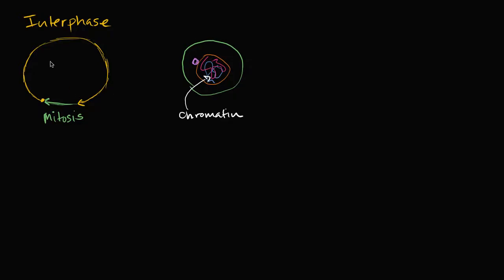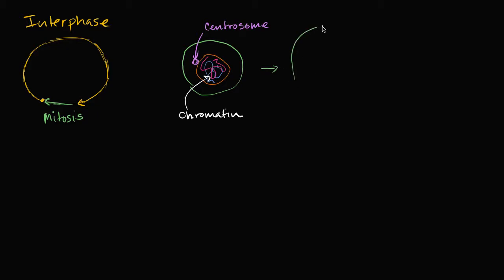I'm also drawing a centrosome, which is going to be important when we go into mitosis. You might ask: doesn't a human somatic cell have 46 chromosomes? It does, but for simplicity we're going to assume this cell only has two chromosomes. So this is the new cell, and it is going to grow — taking in nutrients from its environment and growing as we would expect.